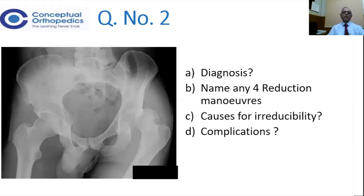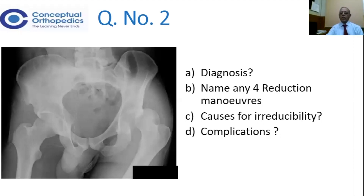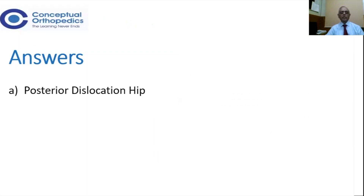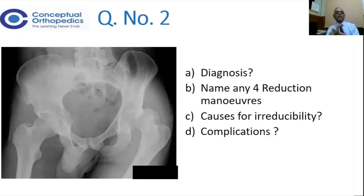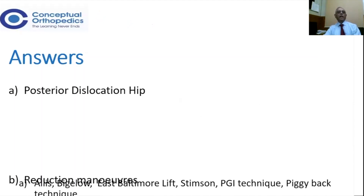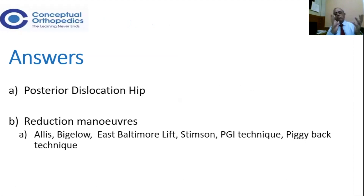And finally, what are the complications that are likely to ensue — immediate and late? Coming to that: the diagnosis, as all of you know, is a classical posterior dislocation of the hip joint as you see there. Whenever the head is up from the acetabulum, it is always posterior dislocation. When it is related to the obturator foramen or medial, it is anterior dislocation.